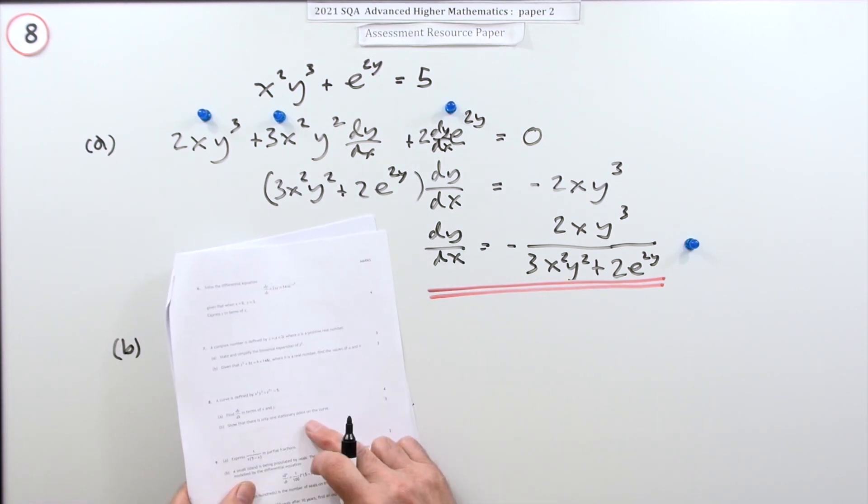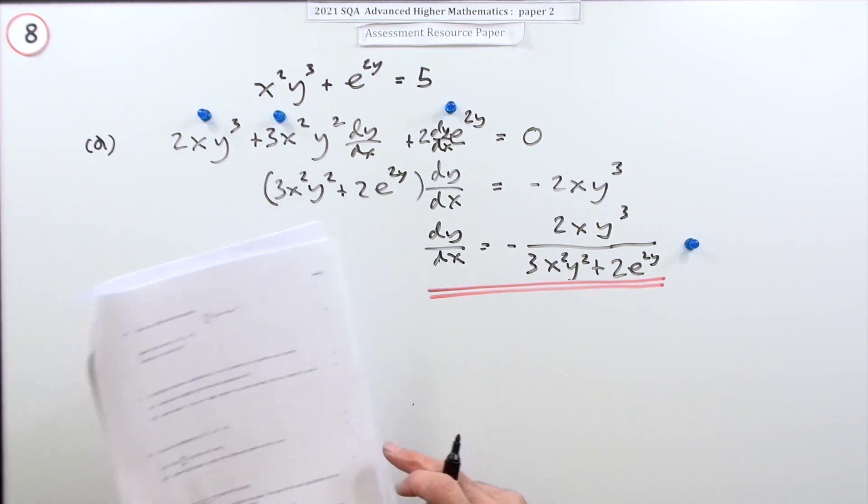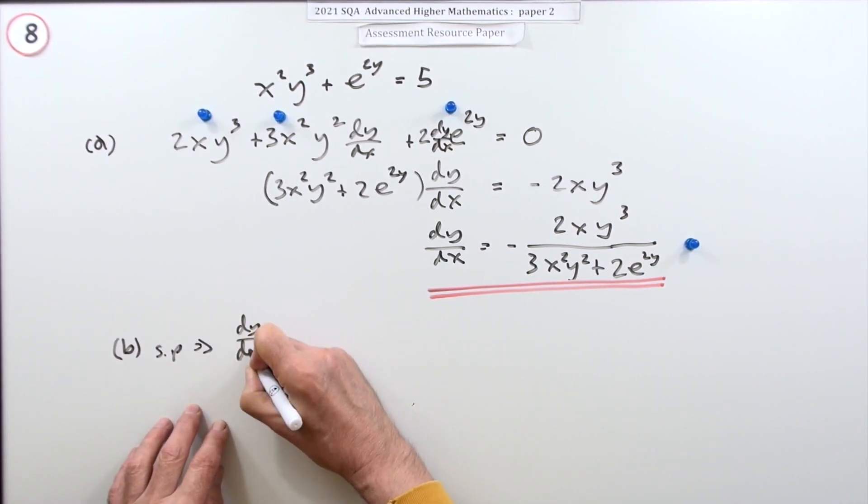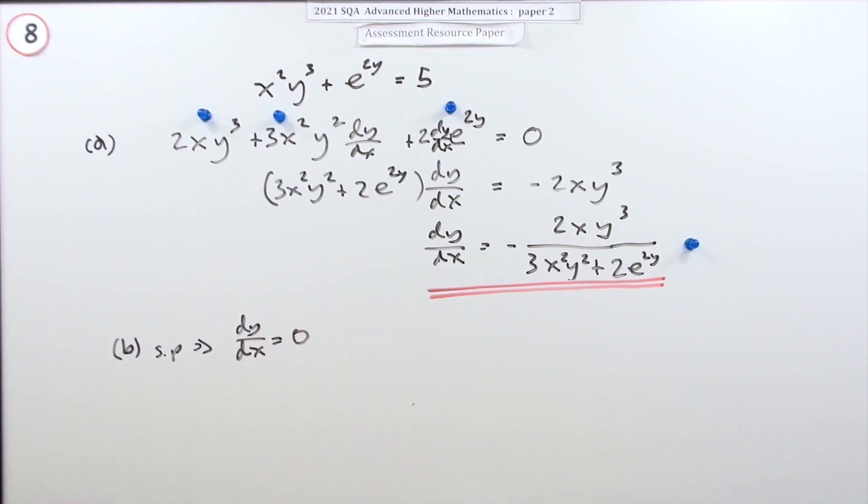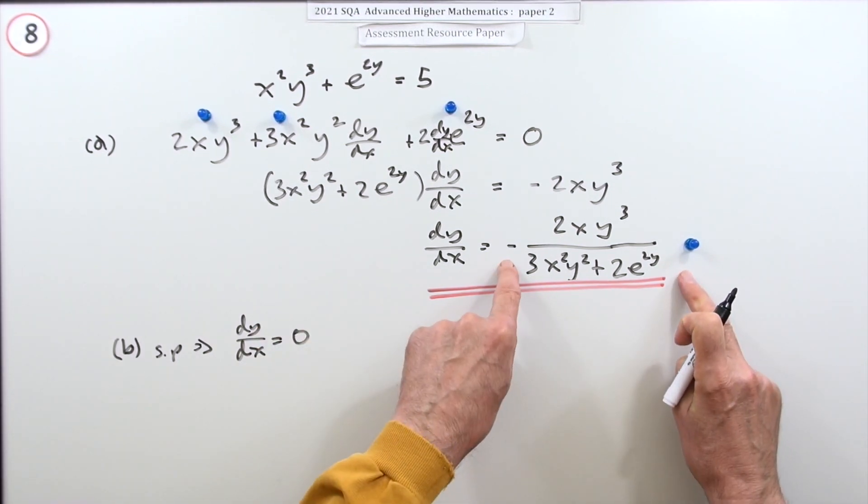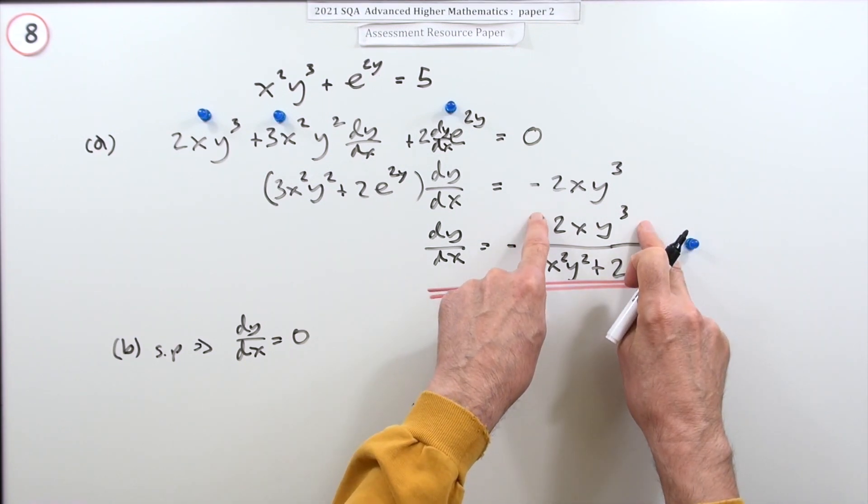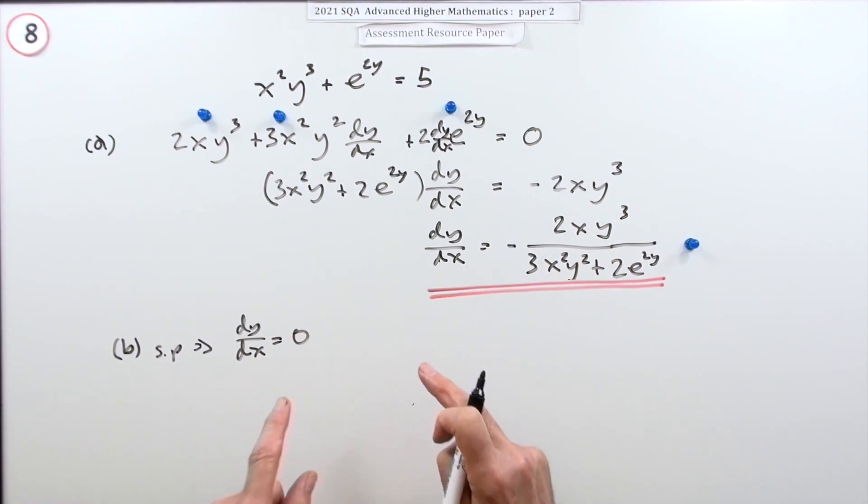Now part b: show that there's only one stationary point on this curve, for three marks. Well, you get a stationary point if dy/dx equals zero. Now if it happens to be a fraction, a rational expression, then it's sufficient for the numerator to equal zero.